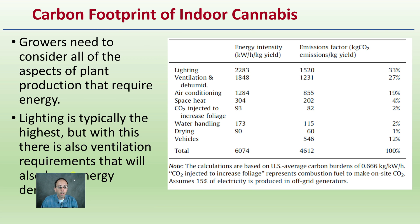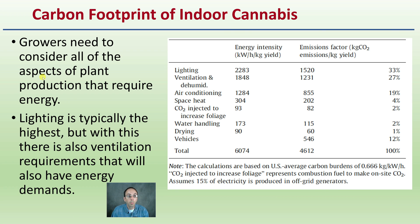Looking at the carbon footprint in chart form, growers need to consider all aspects of plant production that require energy. Lighting is typically the highest, but ventilation requirements also have significant energy demands. In addition to vehicles, drying, and water handling, there are a whole range of other factors to consider — even though lighting and ventilation may represent the greatest energy consumption.